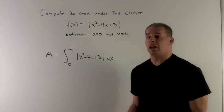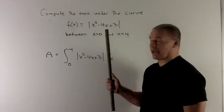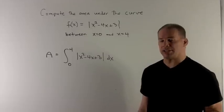We're going to compute the area under the curve of x equals absolute value of x squared minus 4x plus 3, between x equals 0 and x equals 4.